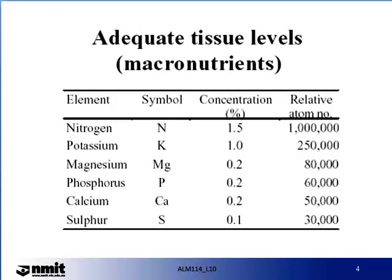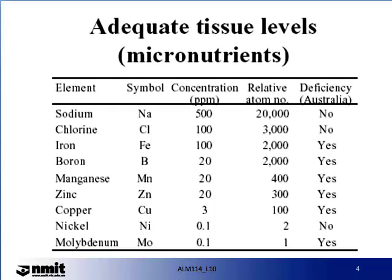The macronutrients are the nutrients that are required in higher concentrations. The following slide illustrates on a percent basis the adequate tissue levels. Nitrogen is required in a higher concentration than sulphur, and this is reflected by some of the groupings. Nitrogen, potassium and phosphorus are the primary macronutrients, while magnesium, calcium and sulphur are the secondary macronutrients. The following slide illustrates the adequate tissue levels for micronutrients. Remember that these are only a guide, and different species will have different requirements.